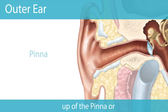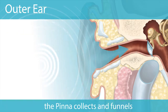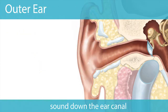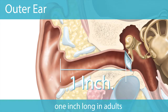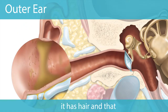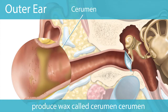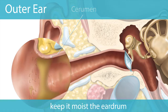The outer ear is made up of the pinna or auricle and the external auditory canal. The pinna collects and funnels sound down the ear canal. The ear canal is curved, S-shaped, and about one inch long in adults. It has hairs and glands that produce wax called cerumen, which helps to lubricate the skin and keep it moist.